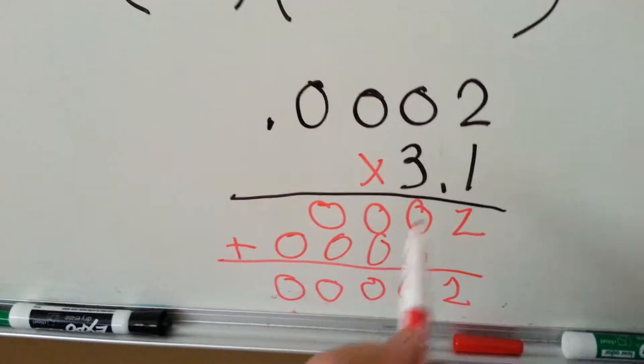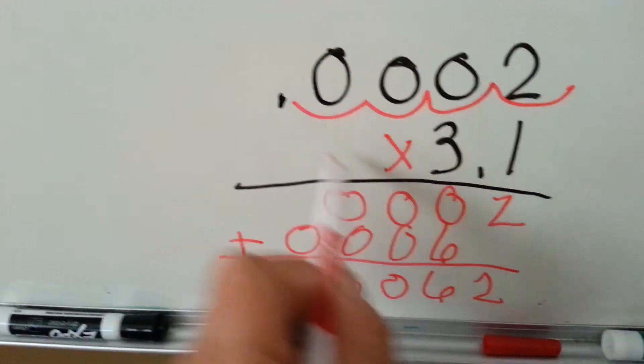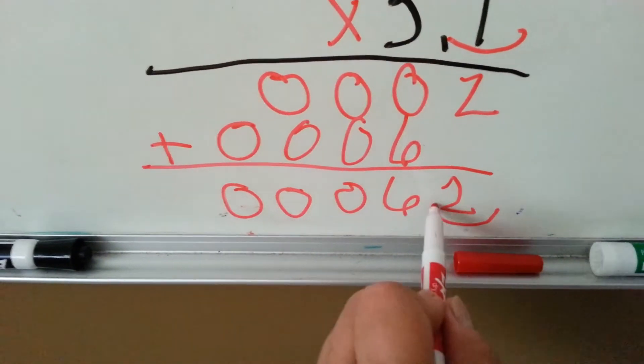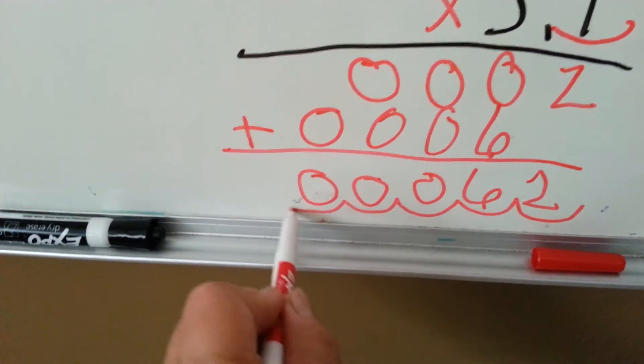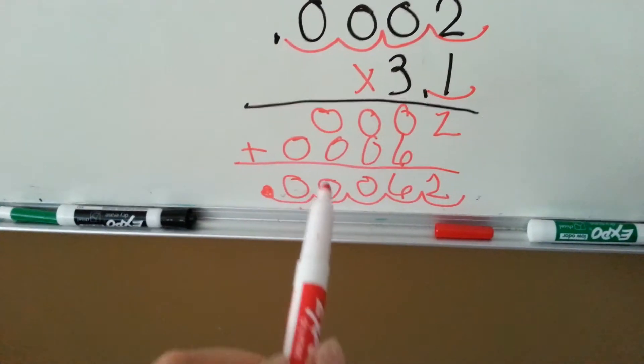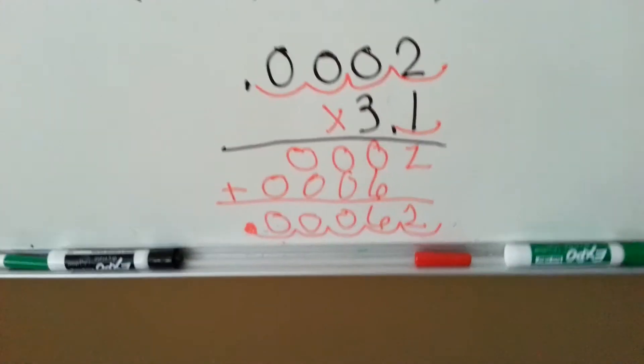Now, how many decimal points do we need? Let's swipe. 1, 2, 3, 4, 5. So starting here we go 1, 2, 3, 4, 5. So the answer is 0.00062 or 62 ten-thousandths.